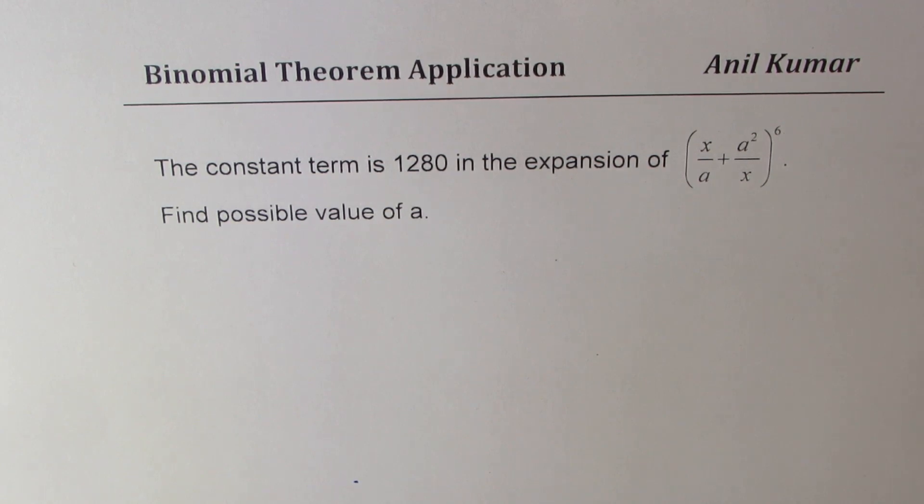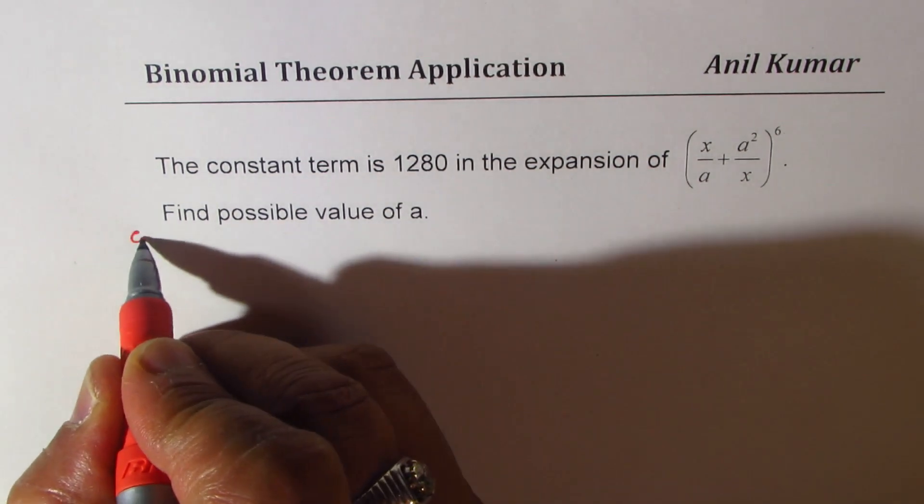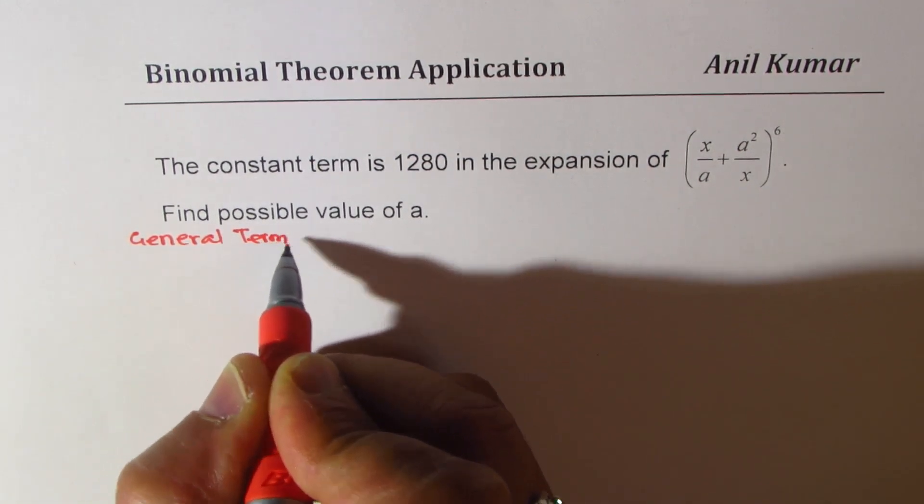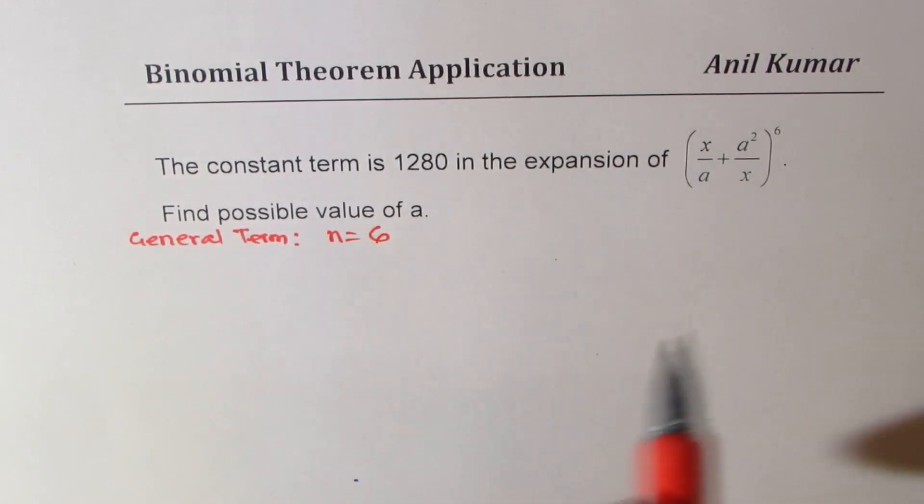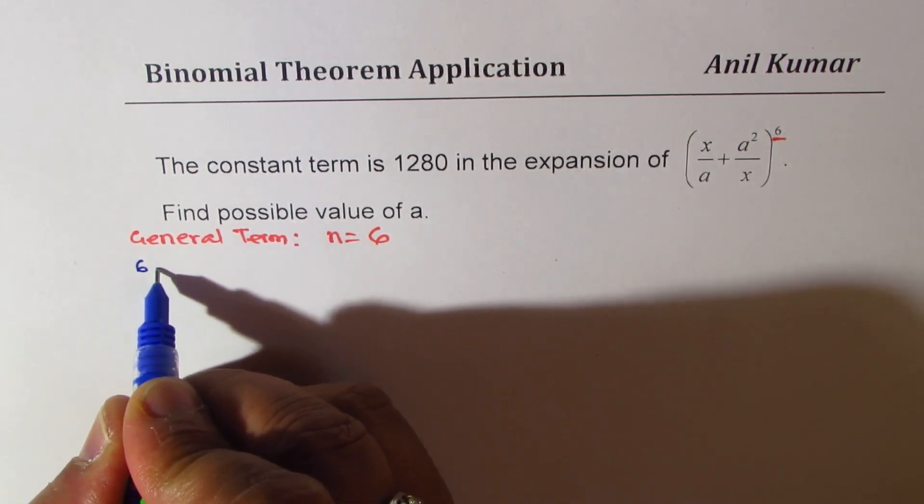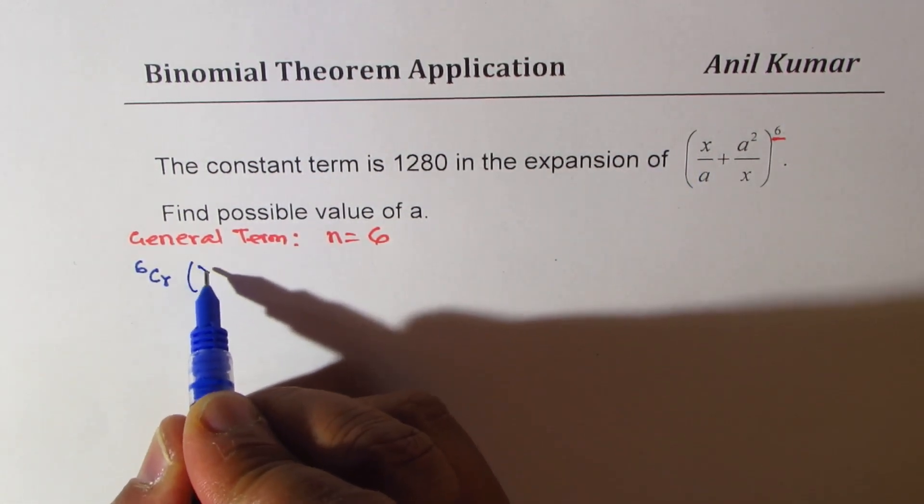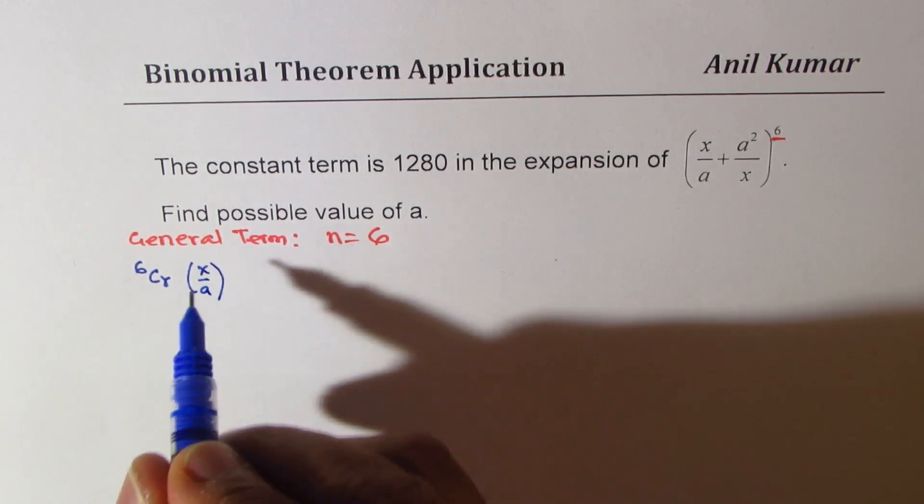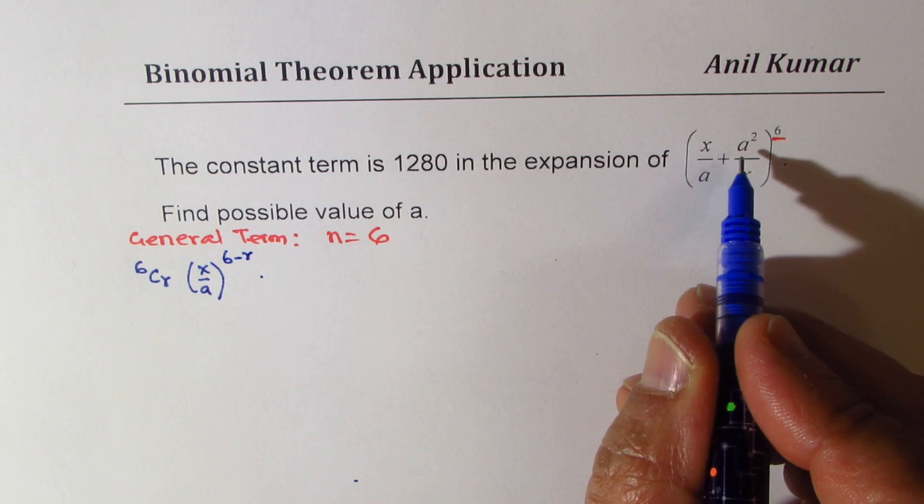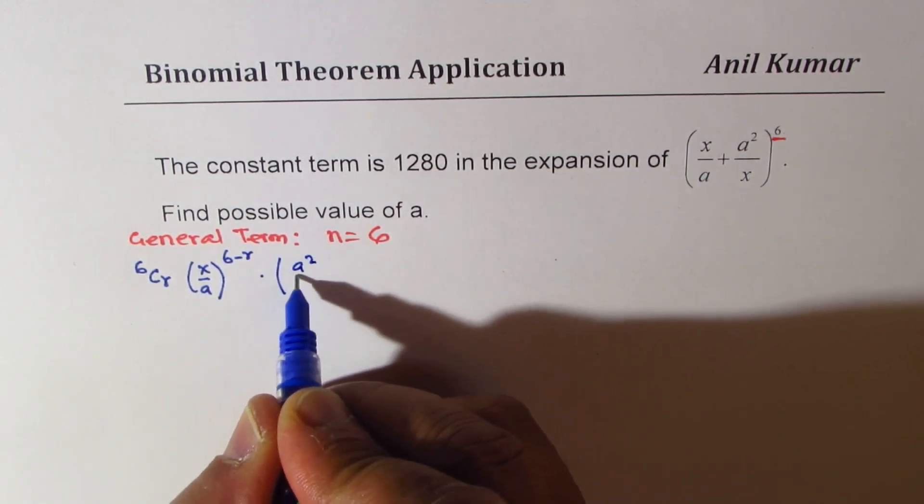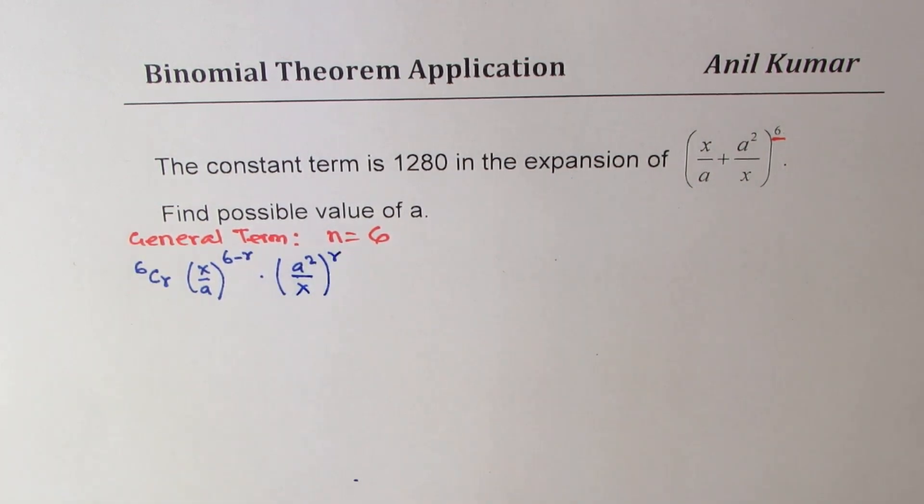Now, for such questions, we need to find the general term first. In this case, what is the general term? We know n equals 6 since the exponent is 6. So we could write the general term as 6Cr. x/a is the first term, so (x/a)^(6-r) times the other term (a²/x)^r. So that becomes the general term.